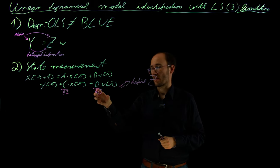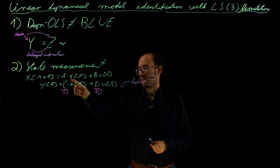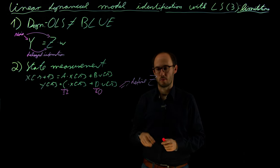That is basically also a limitation that we need this direct access to the states, because otherwise we cannot directly apply the least squares problem, especially when it comes to the regressor vector.